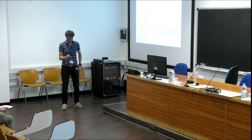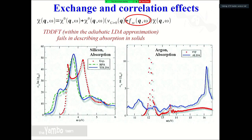Let me start again by stressing this point, which you have already seen in Fulvio's lecture. This was the end of my linear response lecture. We had this Dyson equation for the response function within TDDFT, the TDDFT kernel, which fails completely in getting the optical absorption of silicon and even worse in the case of solid argon. The reason we now know is that this approach misses excitonic effects.